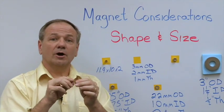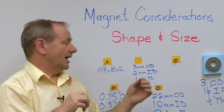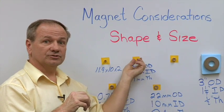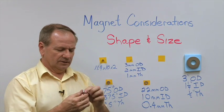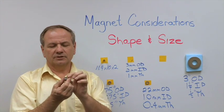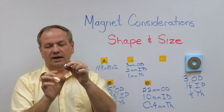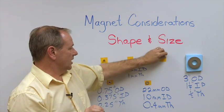We actually have them smaller. We have some 1 millimeter OD, 1 millimeter ID, and 1 millimeter thick ones as well. Then we get to this little bit larger magnet, just showing you the different kinds of magnets that we have.